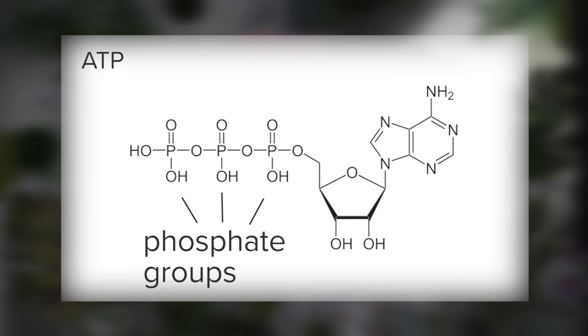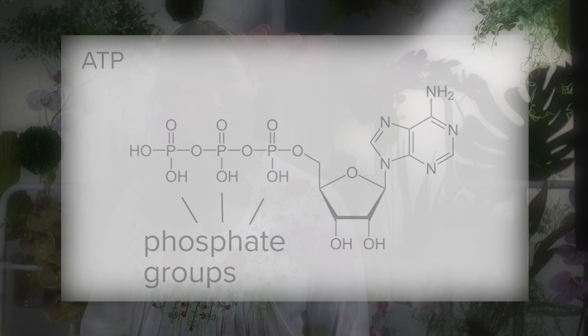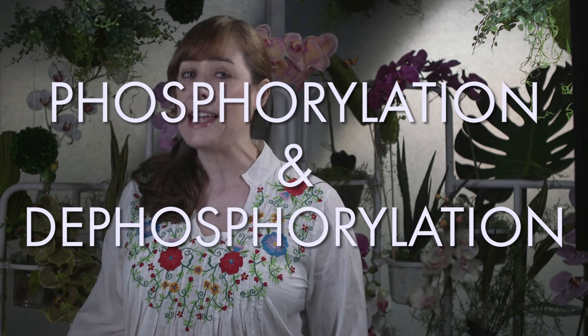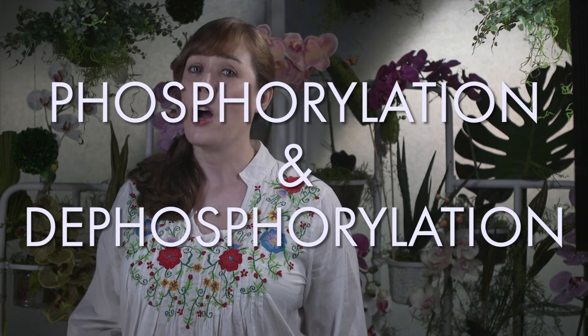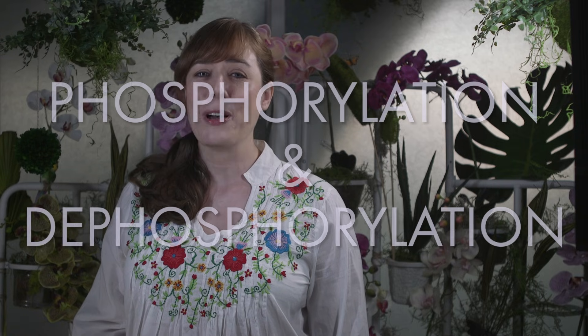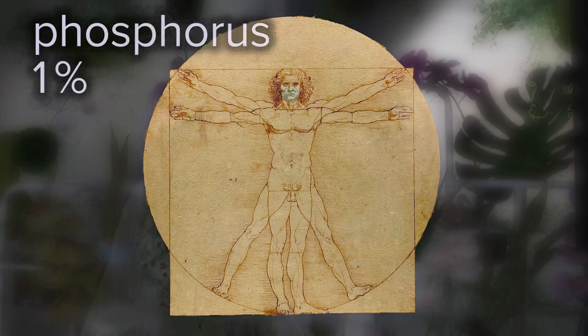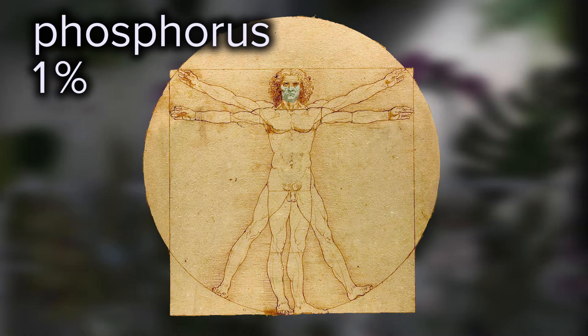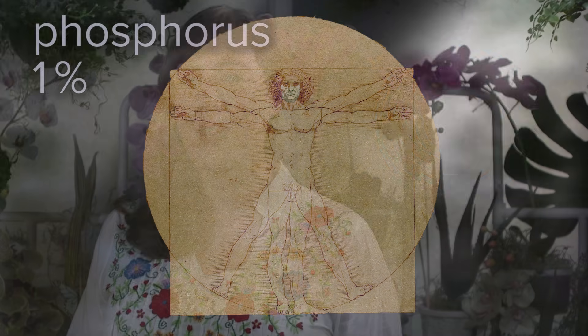Phosphorus is found in the backbone of DNA — remember the backbone goes sugar-phosphate-sugar-phosphate. We also find phosphate groups in ATP, the key form of energy currency in biochemical reactions. Phosphorylation and dephosphorylation events are really important in biochemistry, often used as a signal or trigger for conformational changes in biological molecules. We also find phosphates in phospholipids, an important part of cell membranes. Phosphorus makes up about 1% of humans.